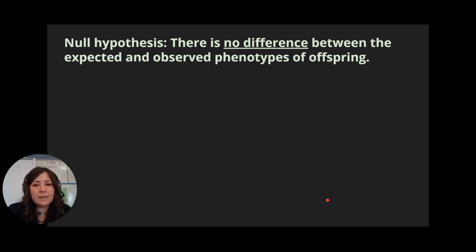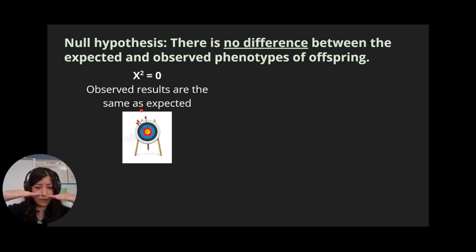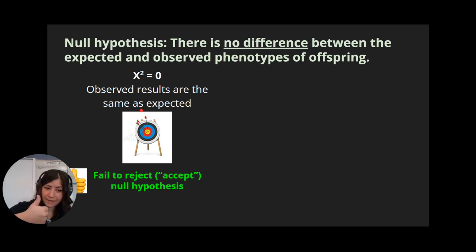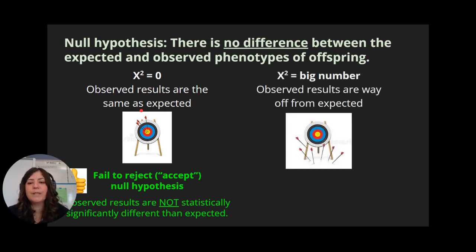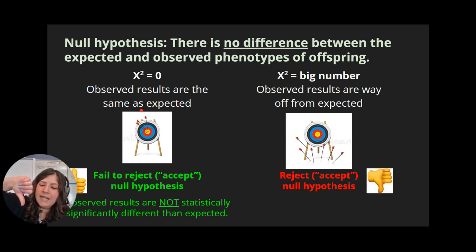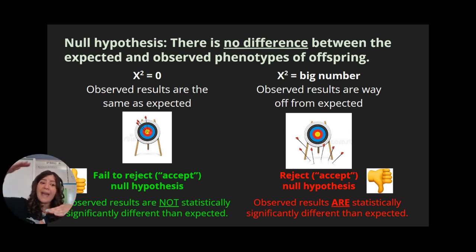Our null hypothesis is always going to be that there is no difference between the expected and observed phenotypes of offspring. If our chi-squared is zero, our observed results are exactly the same as expected — right on target — so the null hypothesis was exactly right and we would fail to reject it. We would say those observed results are not statistically significantly different than what we expected. On the other hand, if our chi-squared is way far off from the target, our observed results are very different from expected, so we reject the null hypothesis and say our observed results are statistically significantly different.